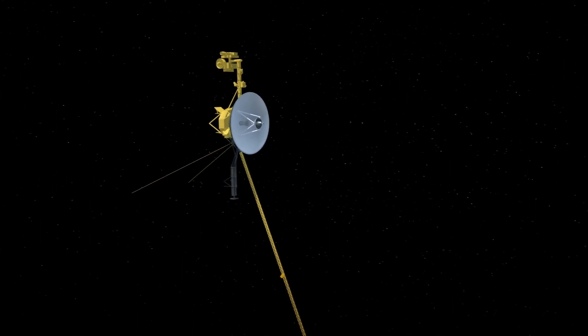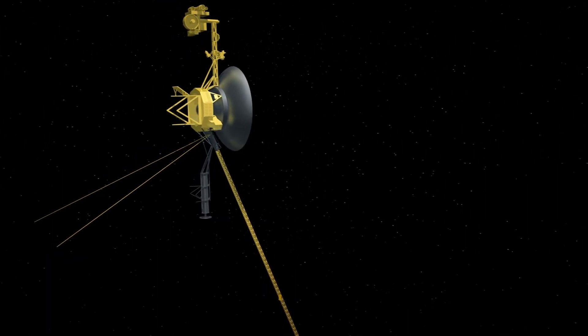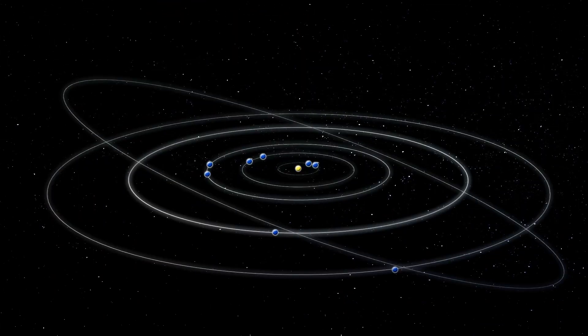The latest data sent from Voyager 2 brought new insight and questions about the boundary region where the Sun's influence ends and interstellar space begins.